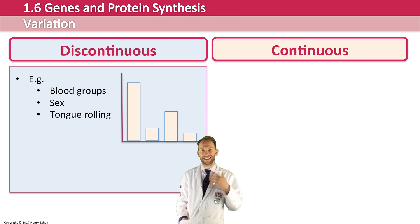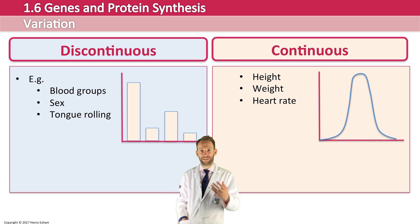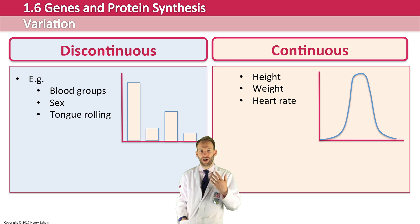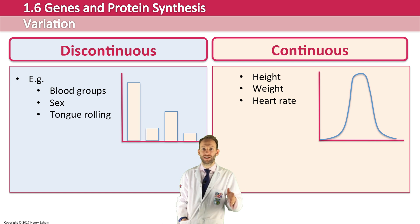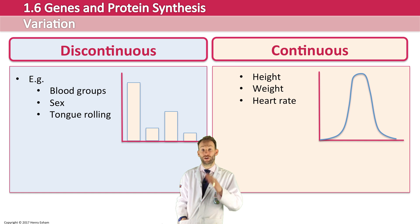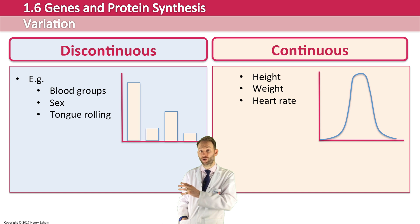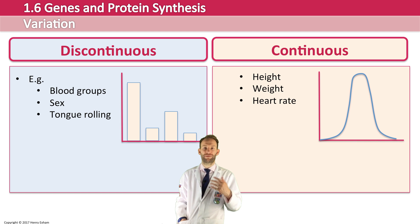Usually discontinuous data is represented in a bar chart. Continuous variation tends to be quantitative differences, which have a range of values with no distinct categories — things like your height, weight, and heart rate. If you look at a population, it tends to be bell-shaped: the majority of the population tend to be around the middle, around the mean. You might have some very tall and very short people, but not so many. So you tend to get this bell-shaped curve with continuous variation.